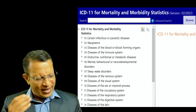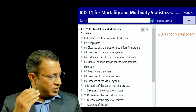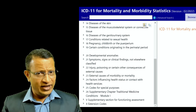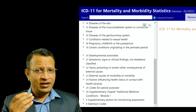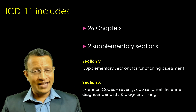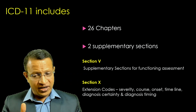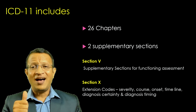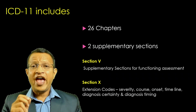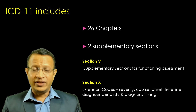You will be able to see the different ICD-11 chapters clearly mentioned — the disease coding of all medical illnesses from Chapter 01 to 26, and from 14 to 26 with 2 subtypes. ICD-11 has 26 chapters and 2 supplementary sections. The first supplementary section is with regard to functioning assessment — assessment of functioning and disability — and the second one is extension codes.